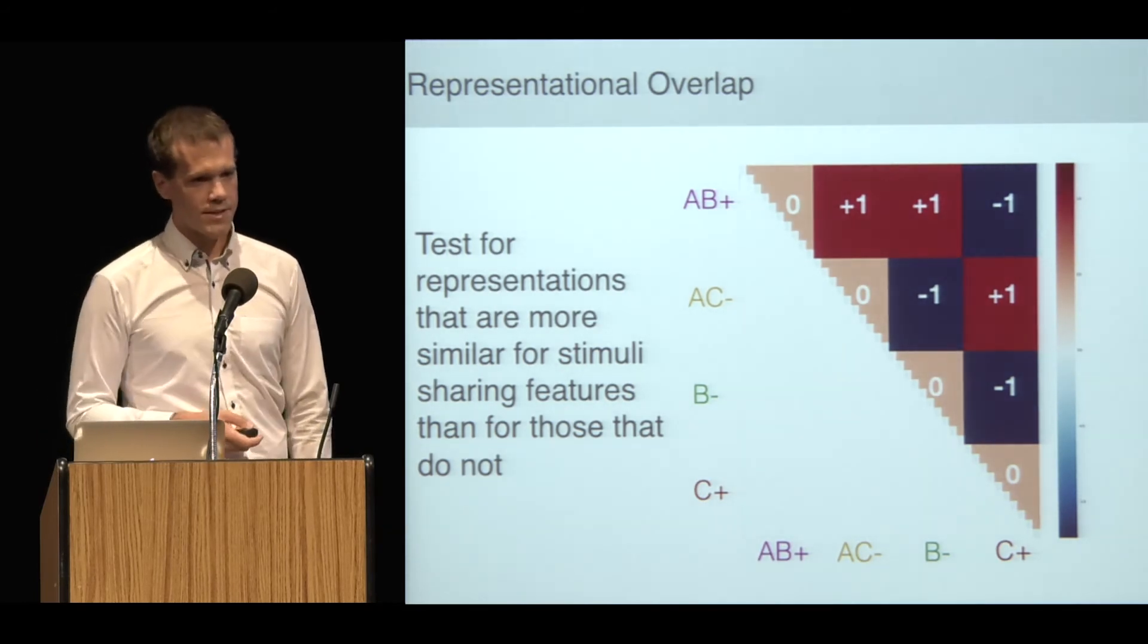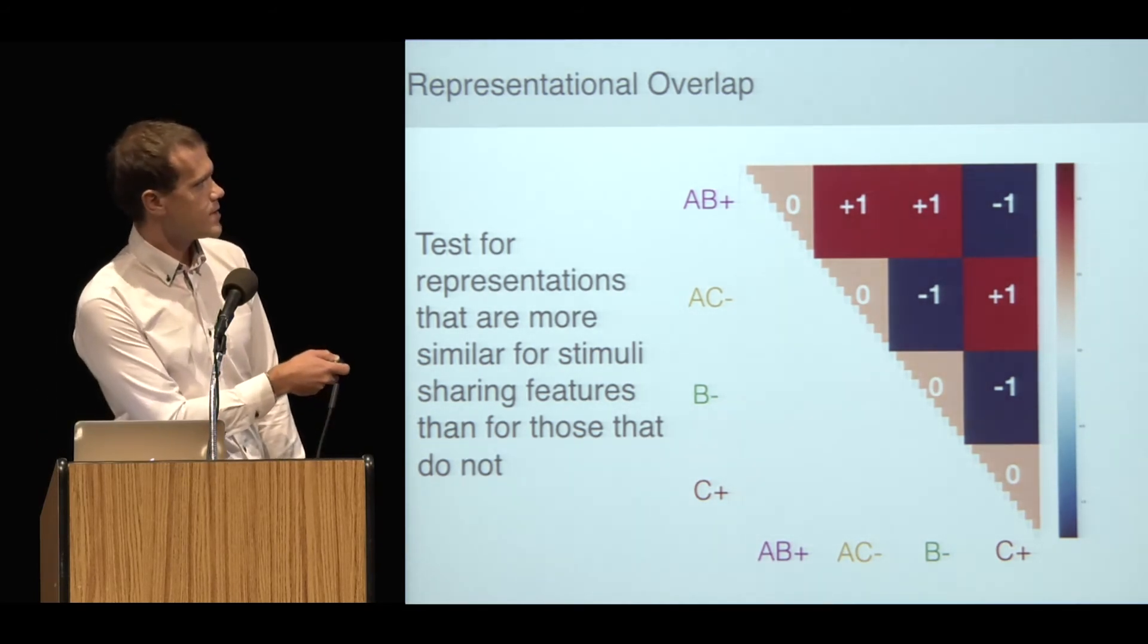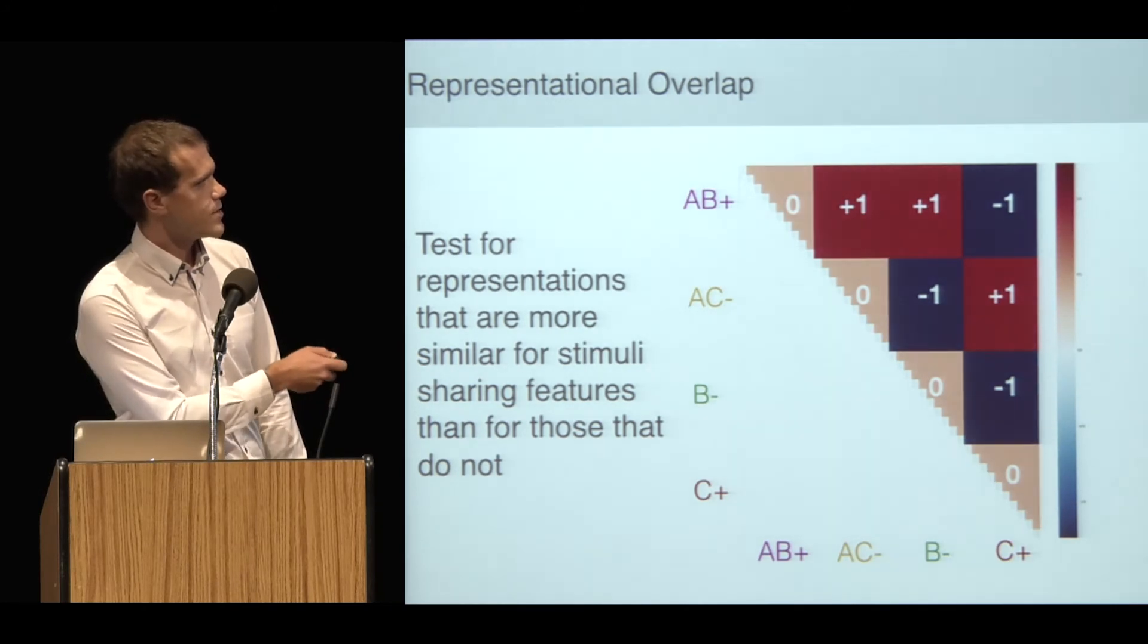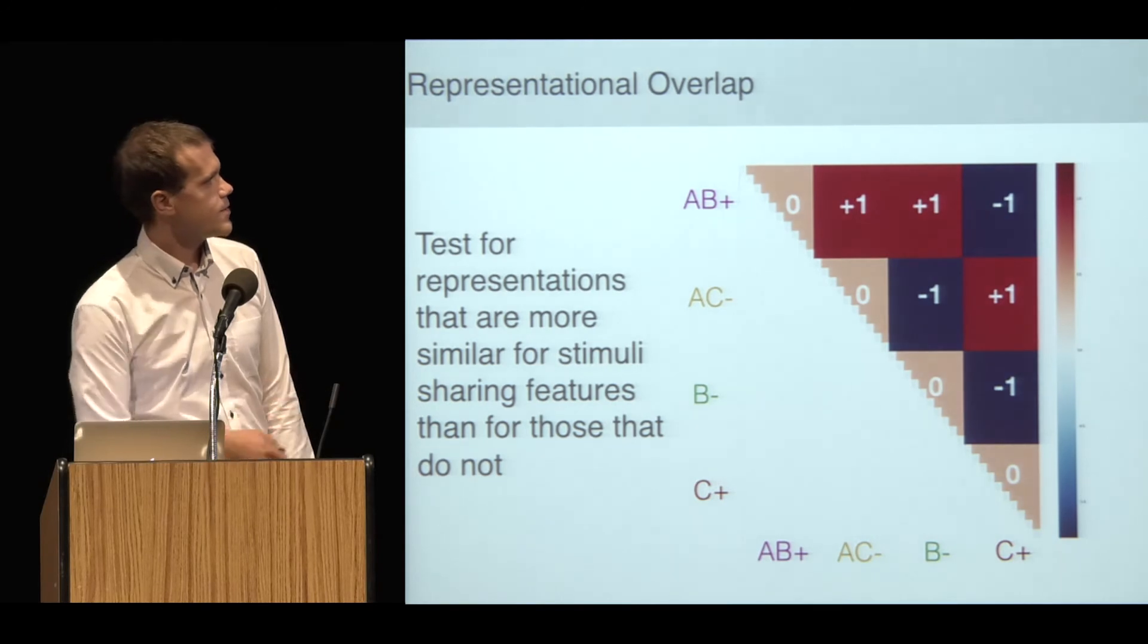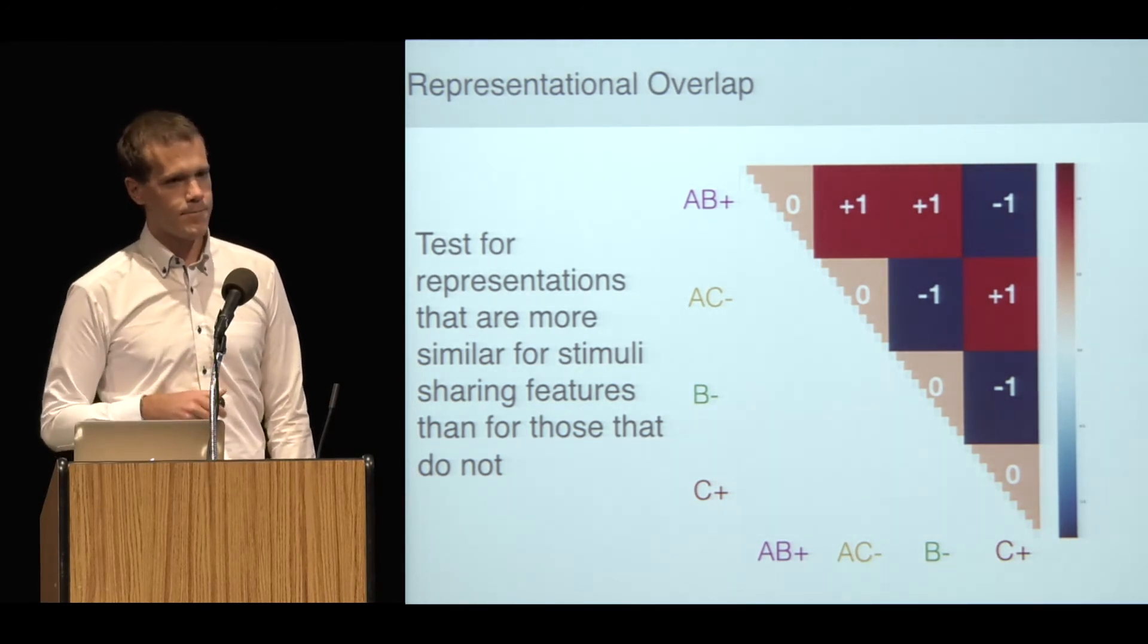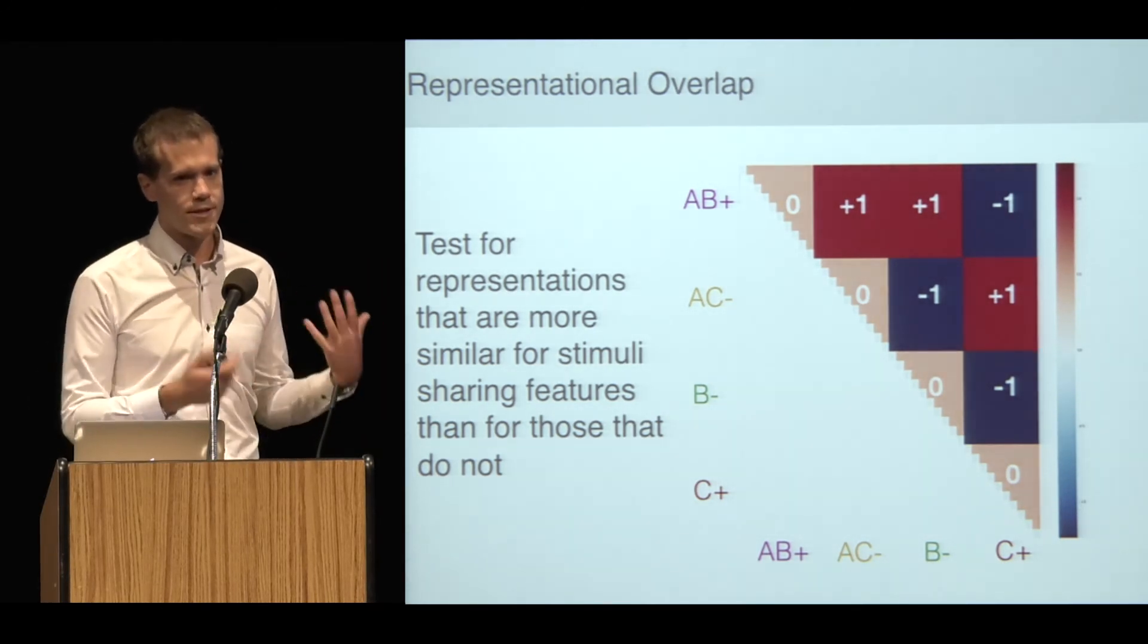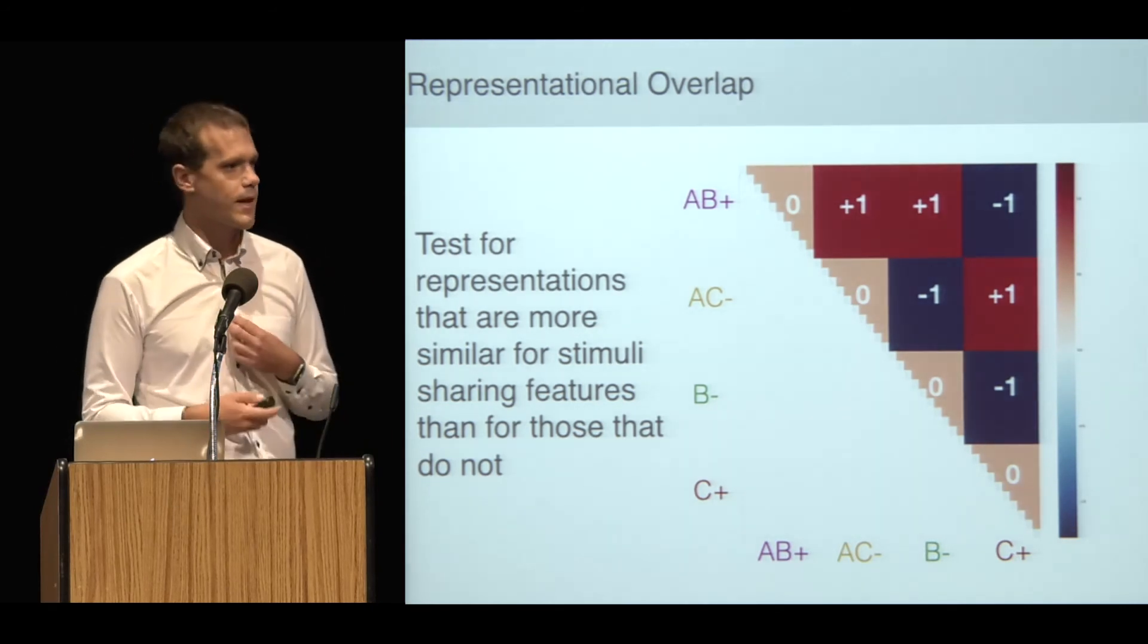But really the key hypothesis relates to the question of whether there's overlap in these representations for stimuli that have features in common. I'm getting at this with a regressor that looks like this. There's a +1 whenever I'm comparing two stimuli that share a feature, a -1 when they don't.